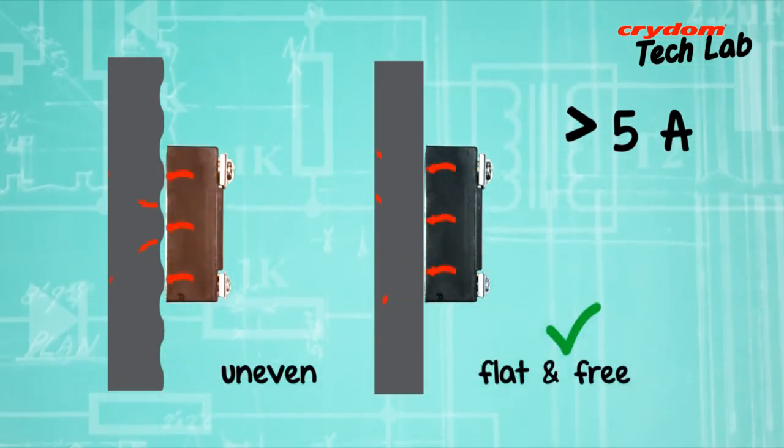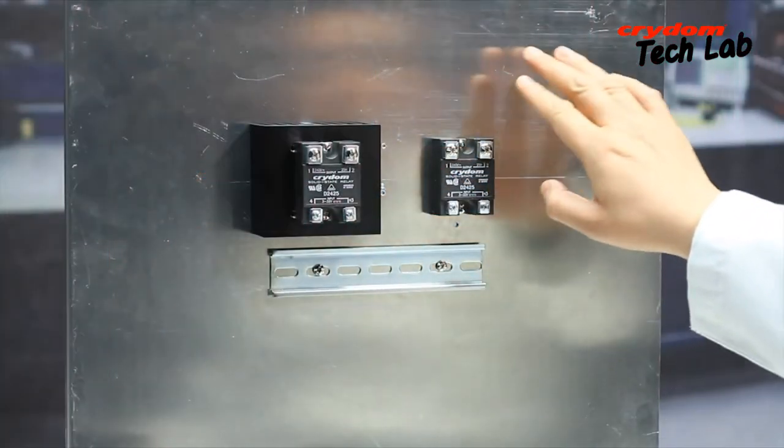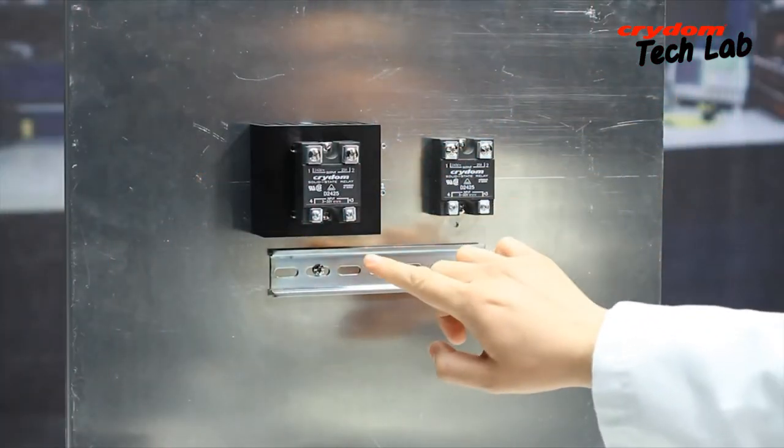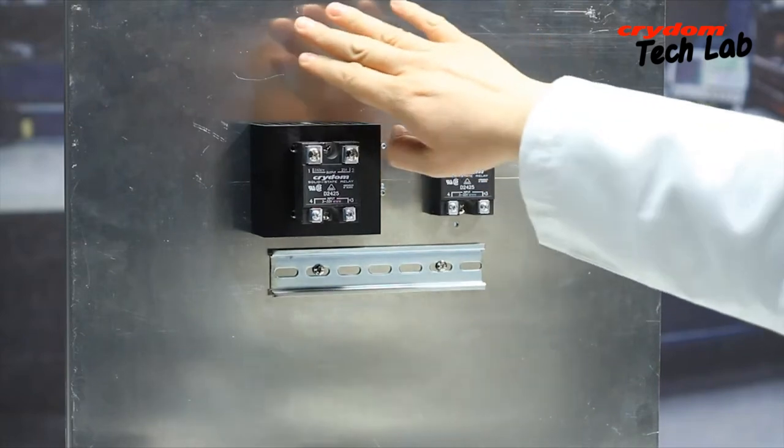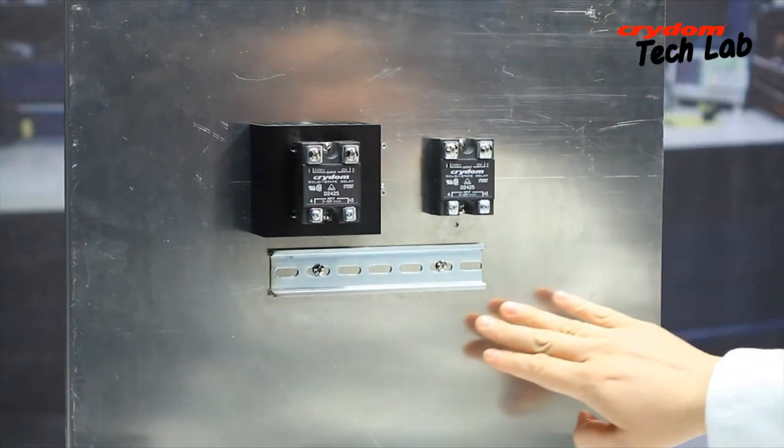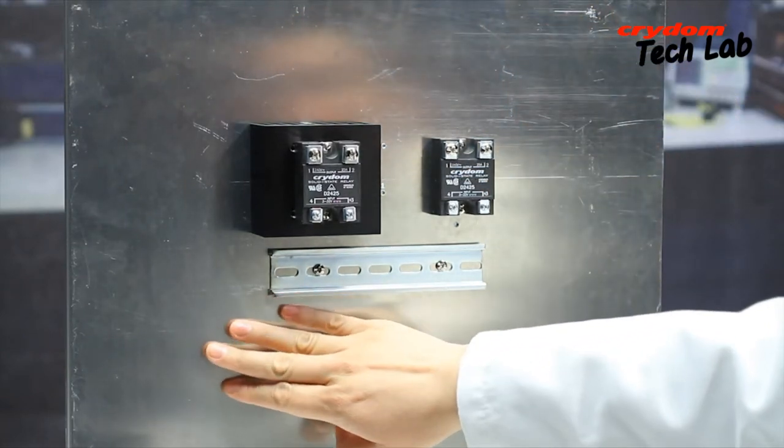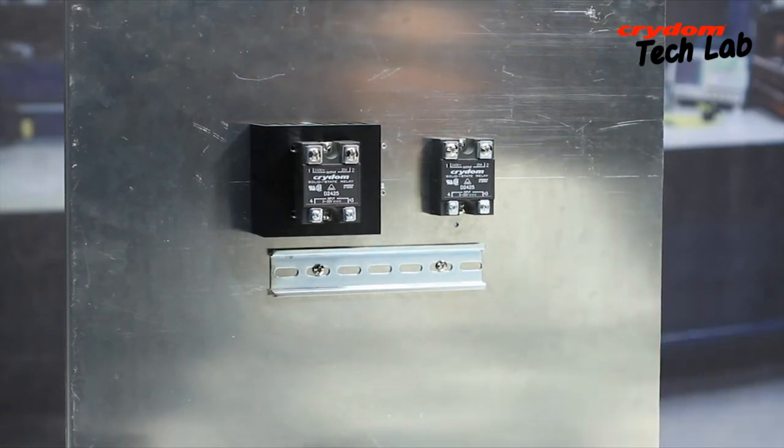Each SSR should be mounted to a thermally conductive surface, such as a panel or extruded aluminum heat sink. The area of the panel or heat sink where the SSR is to reside must also be flat and clear of any interfering materials.